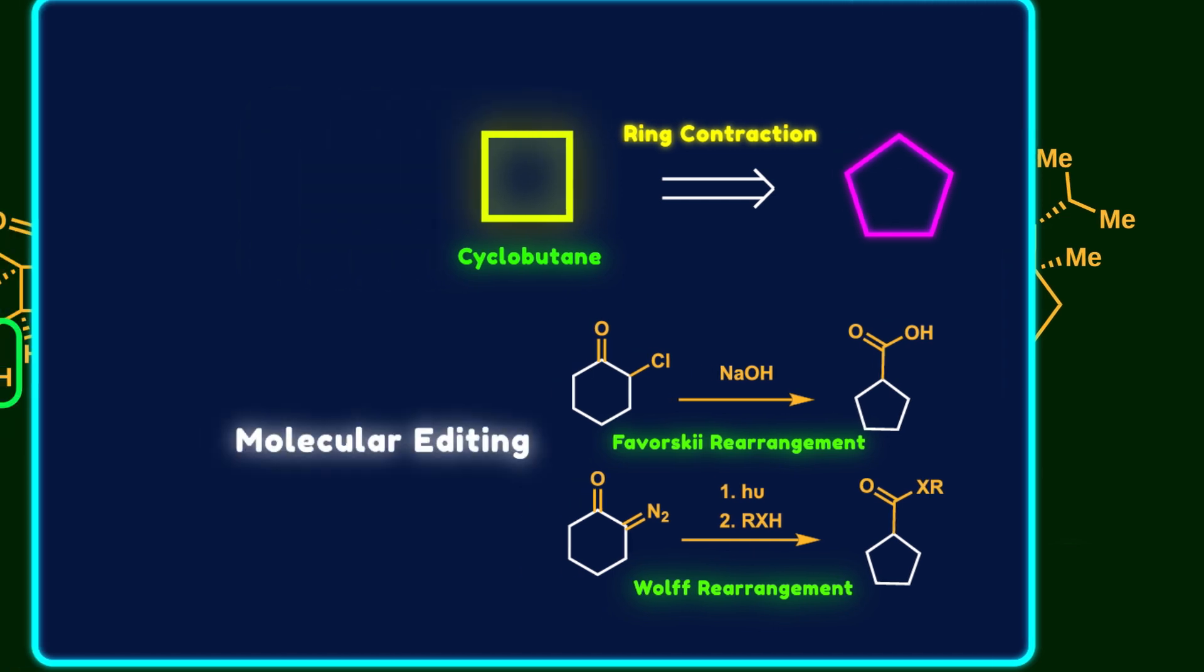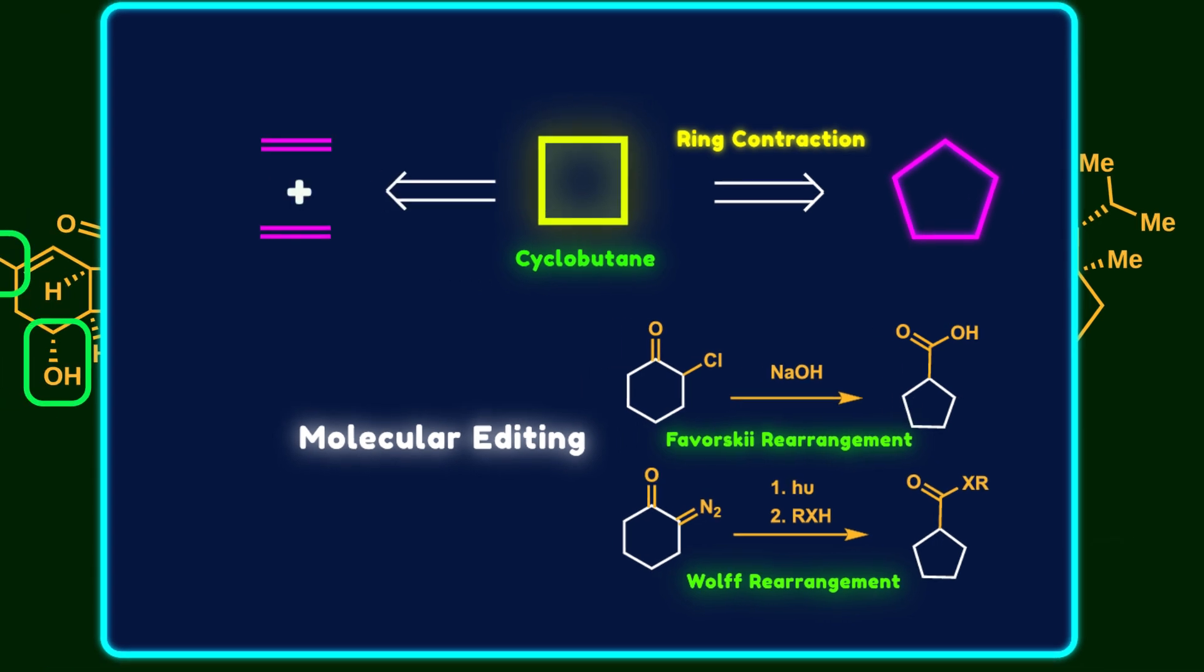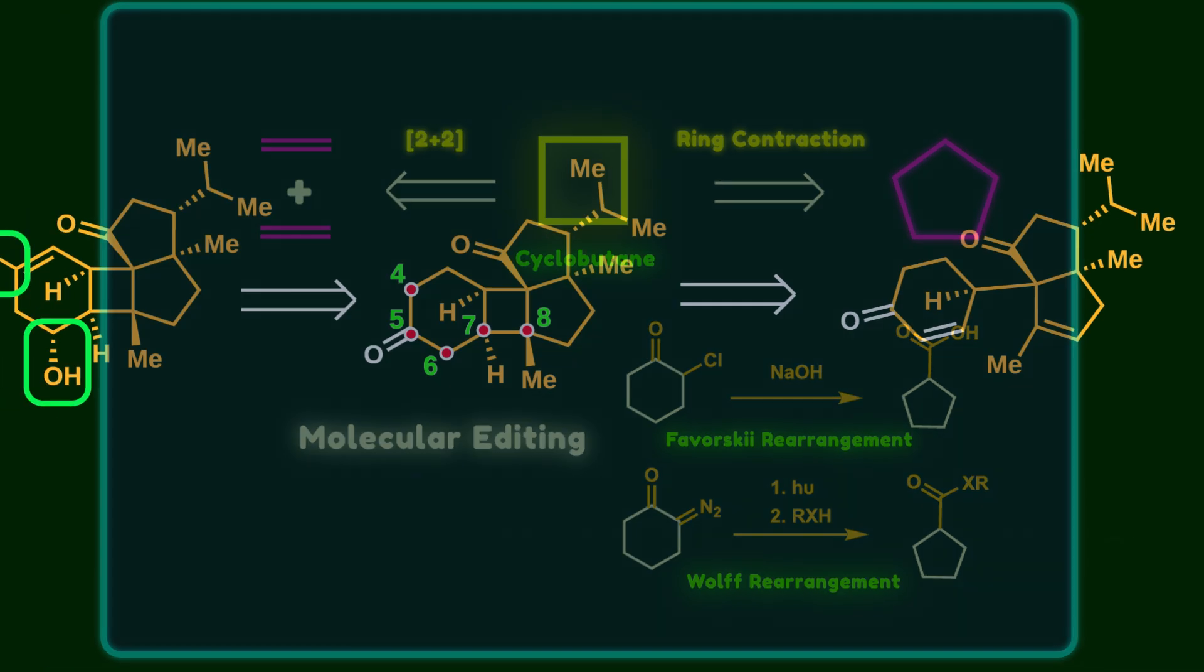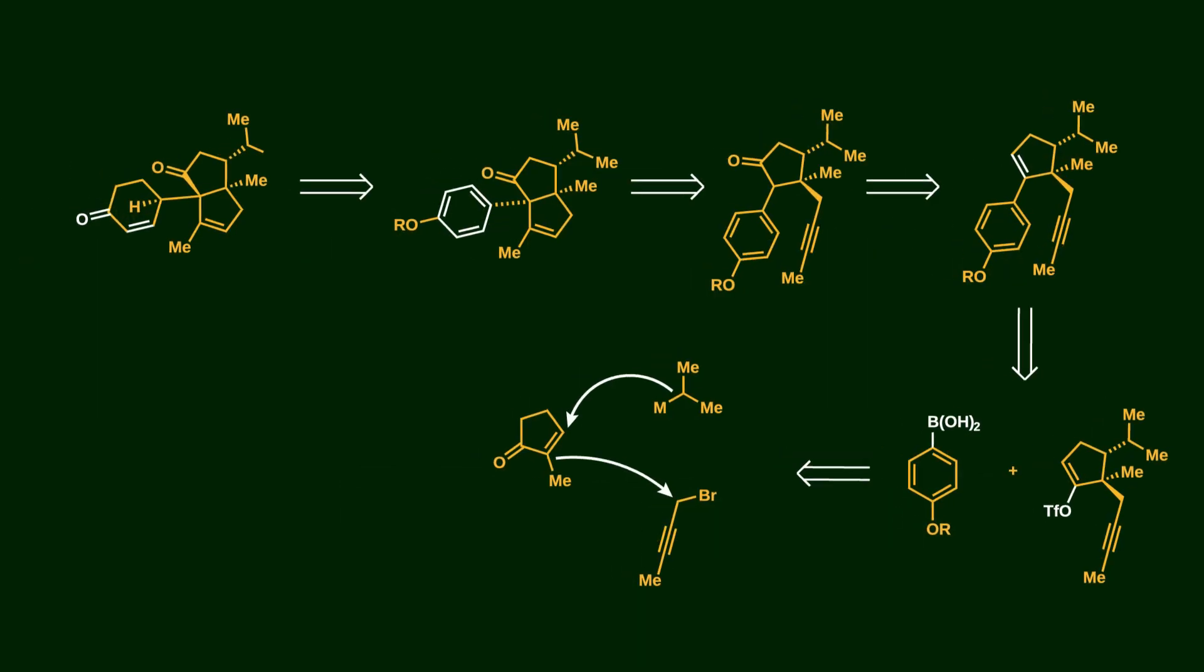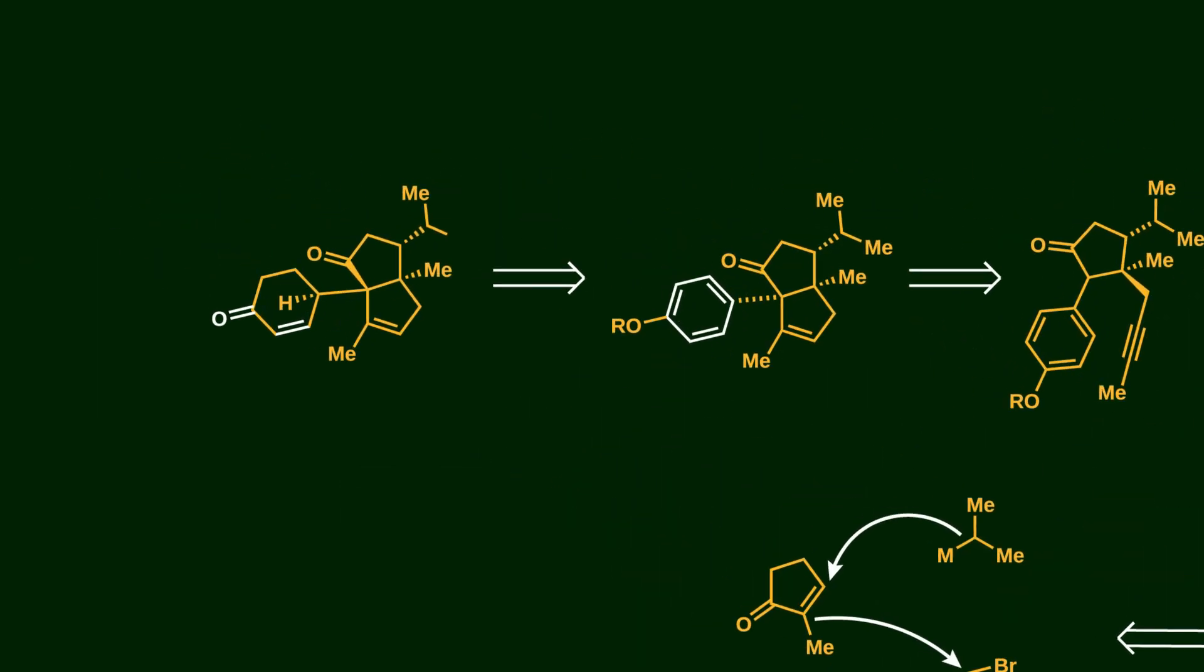This concept is called molecular editing, which is actually a hot topic in modern organic synthesis. The second approach is a 2+2 cycloaddition between two olefins. The strategy that is used in this reaction is called metal hydride hydrogen atom transfer, or MHAT, which involves a radical process. This enone can be achieved by dearomatization of the benzene ring, but controlling the stereochemistry of the hydrogen atom is challenging.